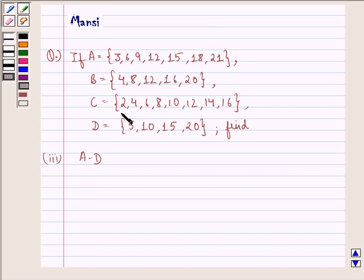C equals the set {2, 4, 6, 8, 10, 12, 14, 16}, and D equals the set {5, 10, 15, 20}, then find A minus D.